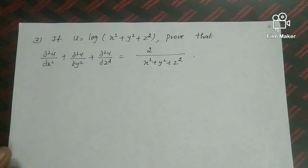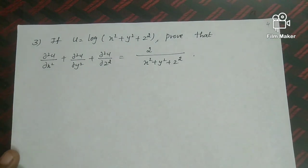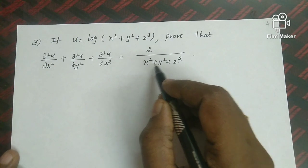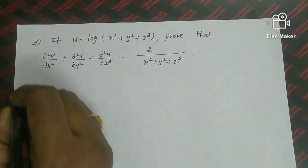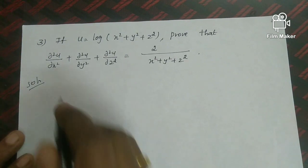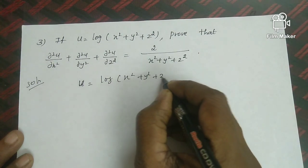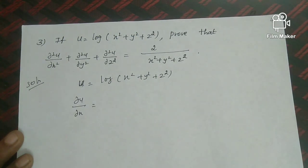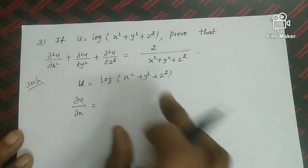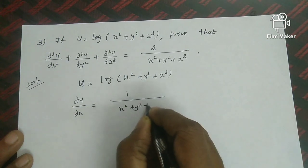Problem 3: If u = log(x² + y² + z²), prove that ∂²u/∂x² + ∂²u/∂y² + ∂²u/∂z² = 2/(x² + y² + z²). First, compute ∂u/∂x using the chain rule for log: the derivative of log of a bracket is 1 over the bracket, multiplied by the derivative of the inside. So ∂u/∂x = 2x/(x² + y² + z²).